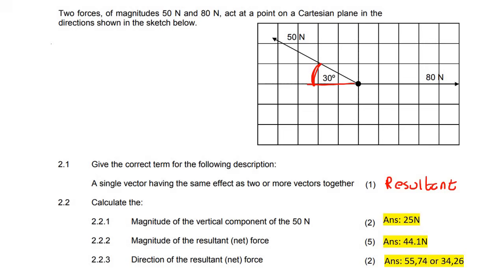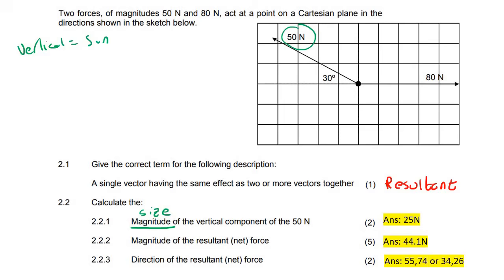The next question says: calculate the magnitude — magnitude just means size, so you don't need to give direction — of the vertical component of the 50 newtons. Now, many learners think: if it says vertical, I must use sin; if it says horizontal, I must use cos. I don't want you to get into that type of thinking, because you're going to get caught out sometimes.